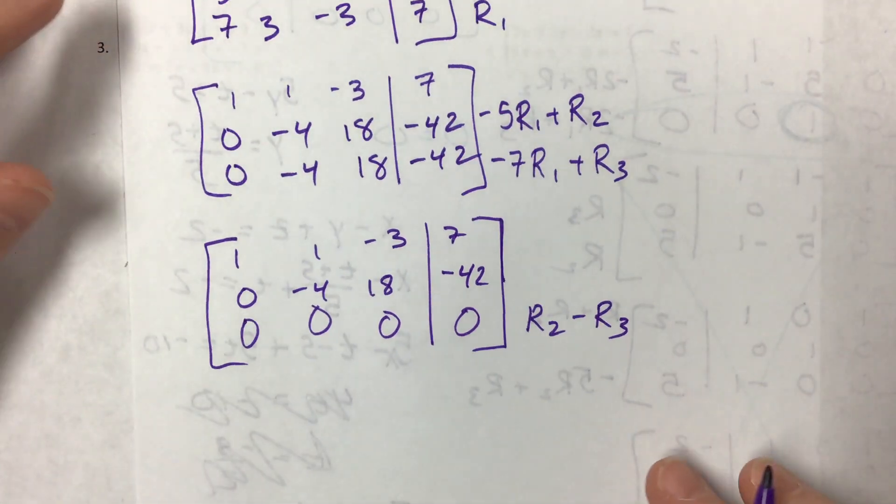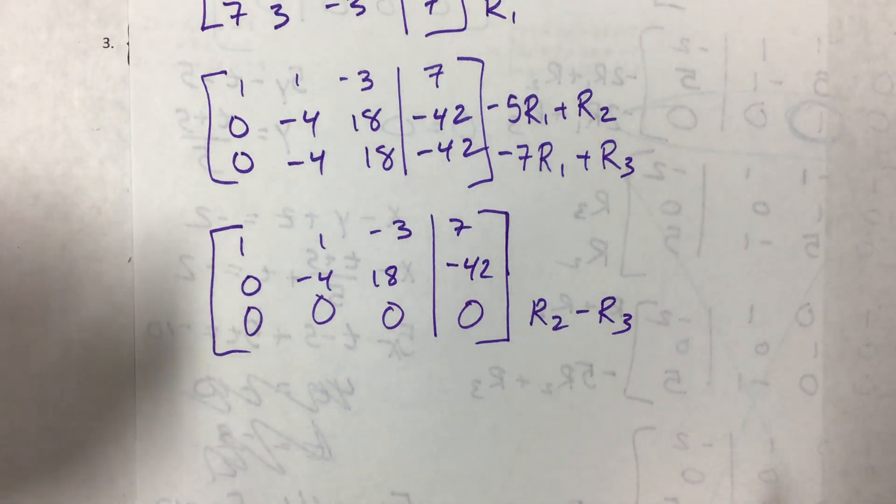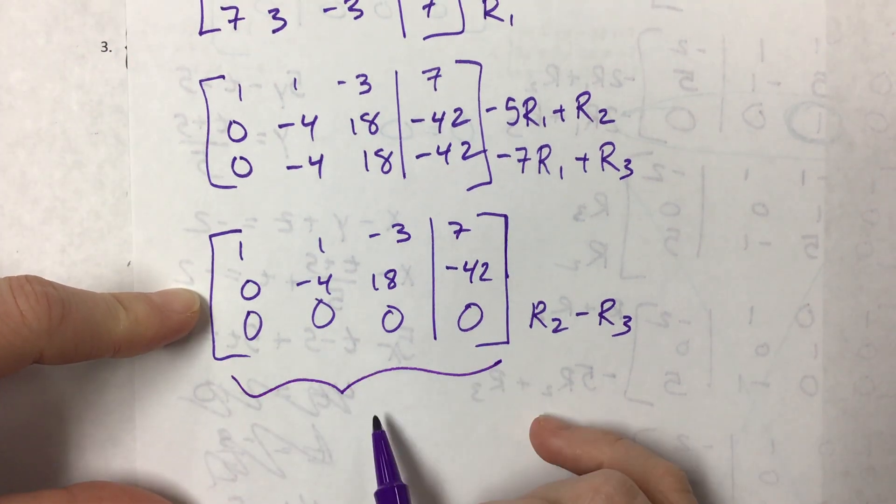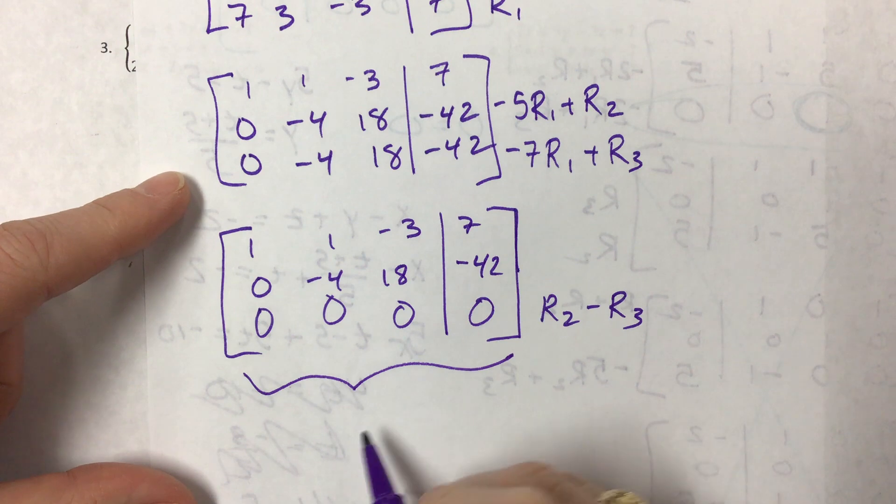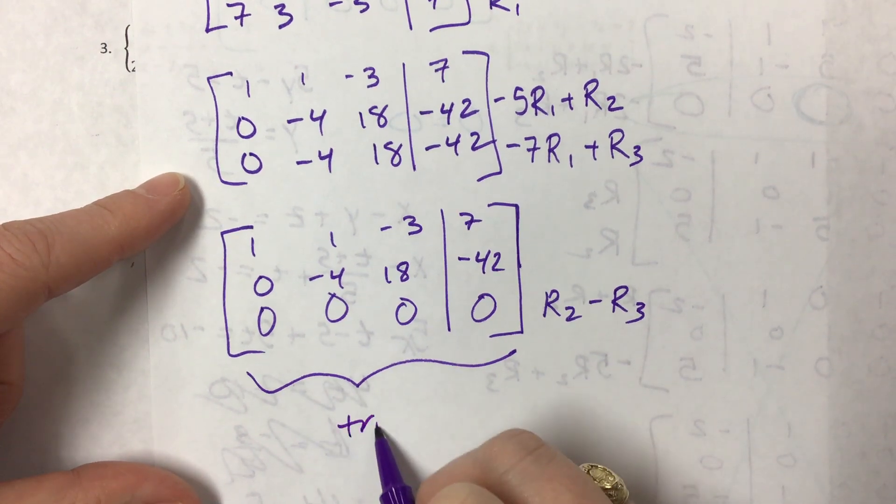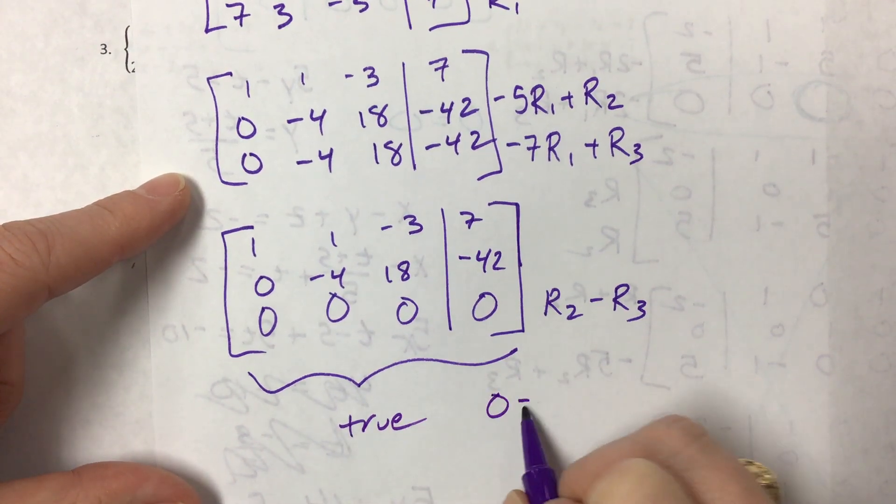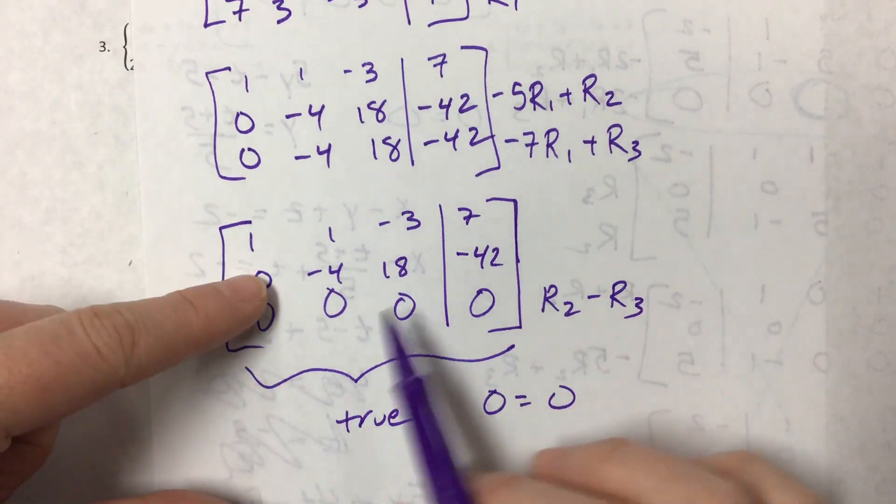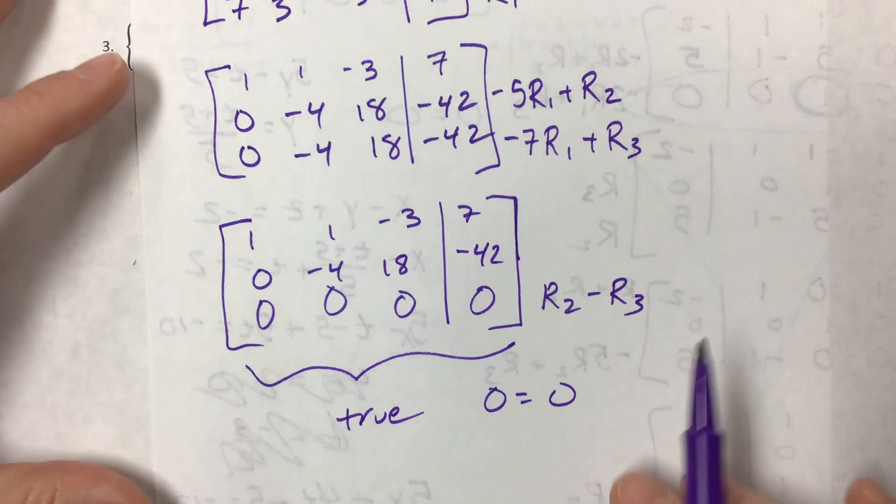And so right here I can tell that I have infinitely many solutions. I had this true statement, and this was true. So because zero equals zero, therefore these three planes are going to intersect in one particular line. Now it's kind of annoying - I've got kind of gross numbers, but so it goes.